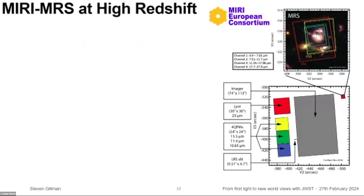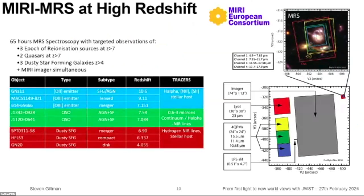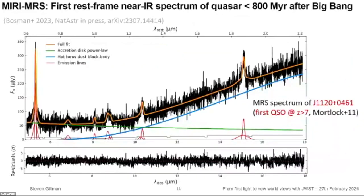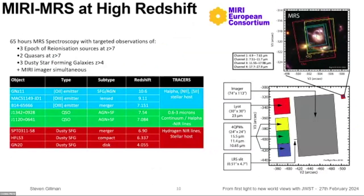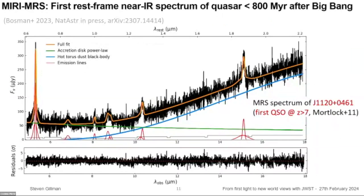The other side of our MIRI program is MIRI MRS spectroscopy at high redshift. These observations were targeted on specific objects — some of which we've already heard about — including MACS1149-JD1 at redshift 9.11, which I'll come to later. We also targeted for the first time a quasar at redshift 7, allowing us for the first time to take a rest-frame near-infrared spectrum of a quasar during the epoch of reionization.